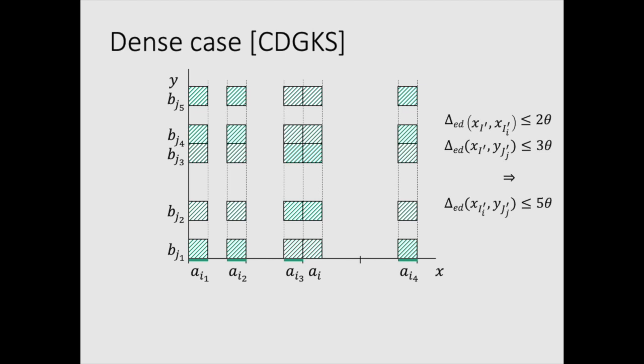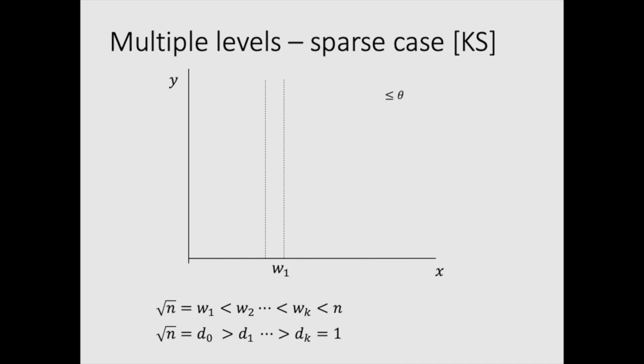So everything I said so far basically corresponds to what CDGKS is doing. So now what we do is actually we take it to multiple levels. So in multiple levels, actually, we start with short intervals, which are actually going to be of a size square root of n.